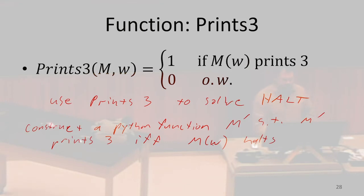So for a given M and W, I'm going to use those to produce some M prime, where that M prime is going to have the property that it's only going to print 3 in the case that M halted when running on W.